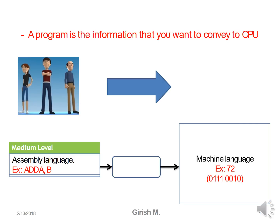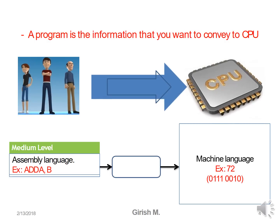A program is information that you want to convey to the CPU. There are many ways to communicate with the CPU - you may use a high-level language or assembly level language. High-level language is architecture independent, meaning you don't need to study the architecture; you just need to know the syntax.